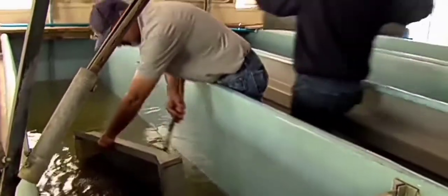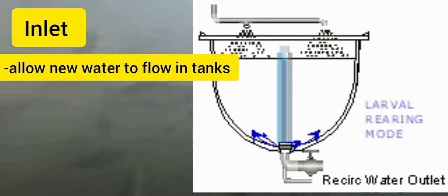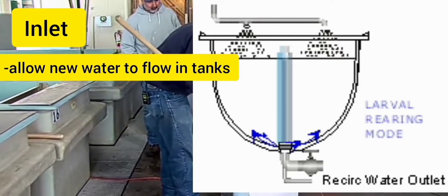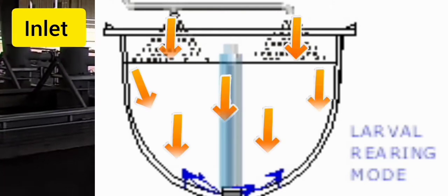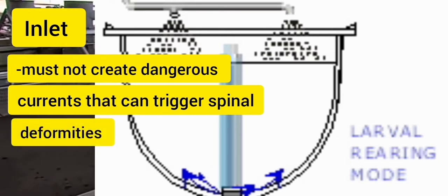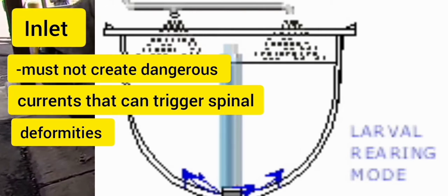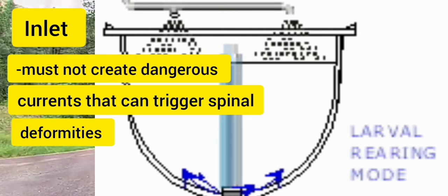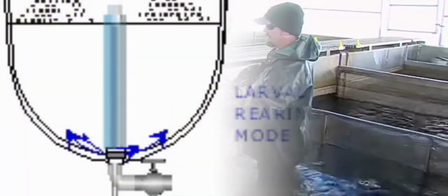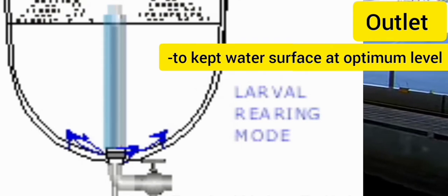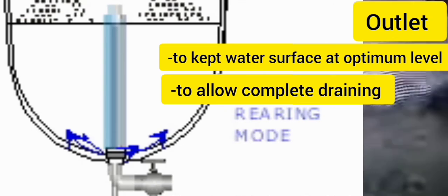To maintain water flow, inlet and outlet systems allow new water in and replace used water during larval rearing, supporting preparation for the next stage of development. The water flow inlet must be placed carefully to avoid dangerous strong currents that can trigger spinal deformities and impede the onset of predatory behavior. Inlets should be at the tank periphery and positioned to avoid tangential currents. Outlets, on the other hand, keep the water surface at its optimum level and allow for complete draining of the tanks and harvesting of fish when necessary.